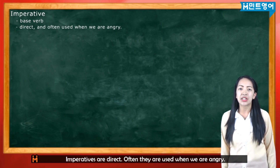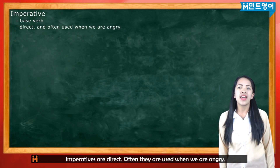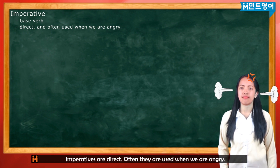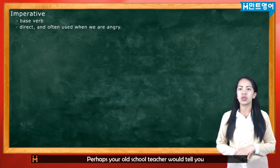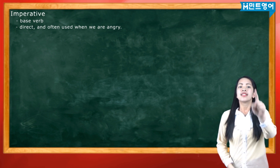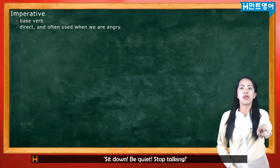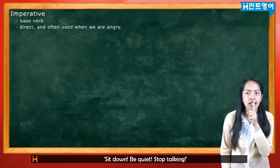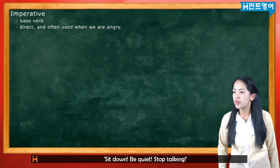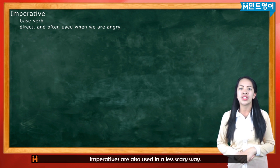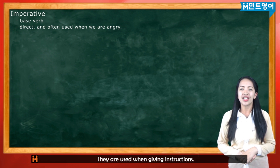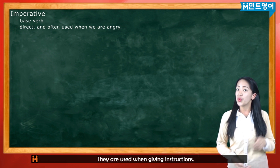Imperatives are direct. Often they are used when we are angry. Perhaps your old school teacher would tell you: 'Sit down,' 'Be quiet,' or 'Stop talking.' Imperatives are also used in a less scary way — they are used when giving instructions.